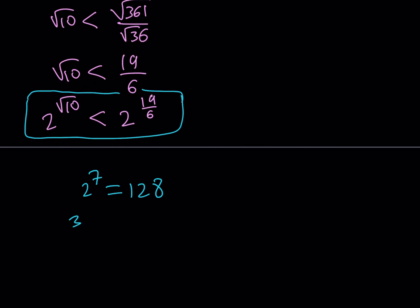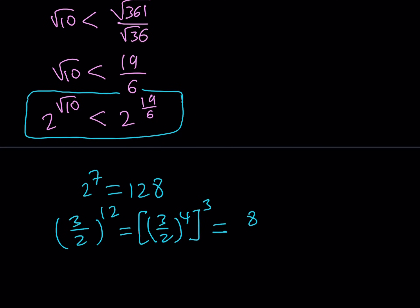Let's start with the following: 3 halves raised to the power of 12 is going to give me 3 halves to the 4th power, and then we can raise it to the 3rd power. When you do that you're going to get 81 over 16 to the power of 3. And as you know, 81 divided by 16 is basically 5 and 1 sixteenth. So now I can write this as 5 plus 1 over 16, to the power of 3. I'm able to compare this fraction (3 halves)^12 with (5 plus something)^3. Now, 5 to the 3rd power is 125, and I'm going to compare that to 2 to the power of 7, which is 128, to establish the relationship.